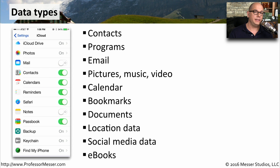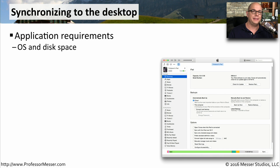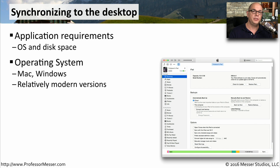Here's an example of just some of the data types that you might need to synchronize. This is a view of my iCloud settings on my phone, and you can see I can individually enable and disable different settings of what I want to synchronize to the iCloud. If you don't want to synchronize out to an external network connection, you can always synchronize locally to your desktop. You'll need to look at the application requirements for your phone to see what OS and how much disk space you'll need.